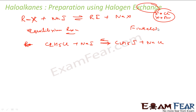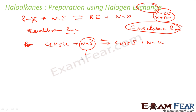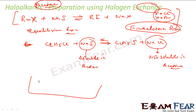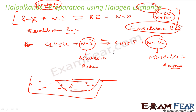This is also called the Finkelstein reaction. Since it's an equilibrium reaction, how do we proceed? It is based on solubility. Sodium iodide is soluble in acetone, but sodium chloride or sodium bromide is not soluble in acetone. The whole reaction takes place in a solvent called acetone. This is a tumbler — I have acetone here and the reaction is going on. Sodium chloride crystals precipitate out. Using a sieve or something, you take this out, then the concentration of sodium chloride decreases, and the reaction moves in the forward direction.